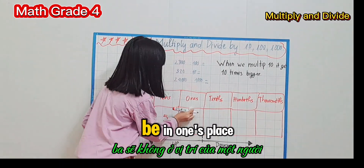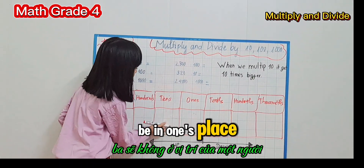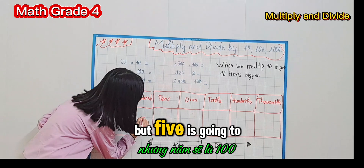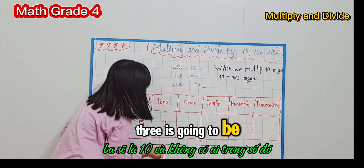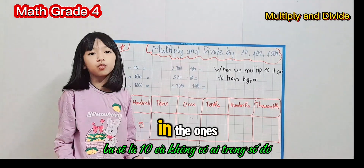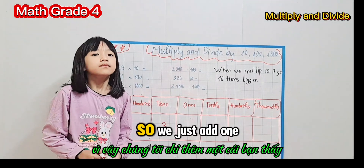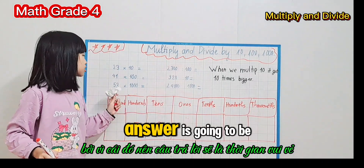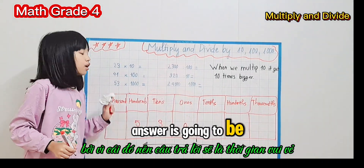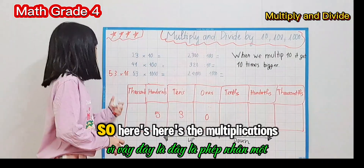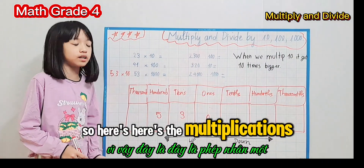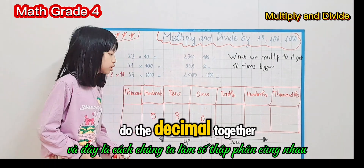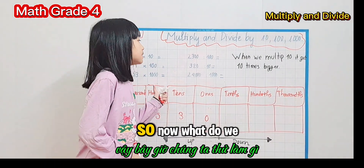That means three is no longer in the ones place, and five is no longer in the tens place. Five goes into the hundreds, three goes into the tens, and we just add a zero in the ones. So the answer is 530. That's how we do it using the place value chart, and the same idea works with decimals.